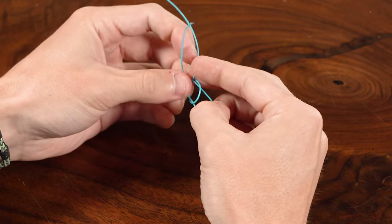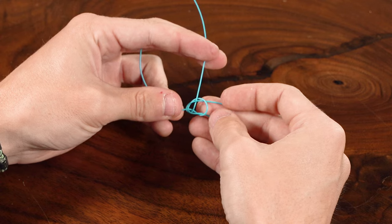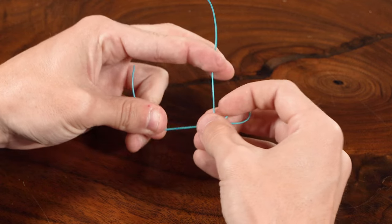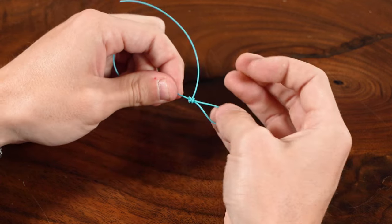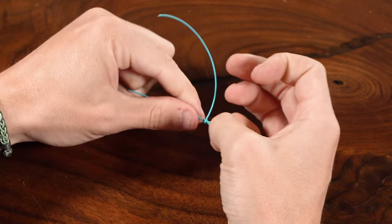Now you want to make sure that when you're seating this that your tag end, this one up here in my middle and pointer finger, is perpendicular to the knot. If that's not sitting in that orientation, the knot's actually not set correctly and it can turn into a bit of a slip knot.